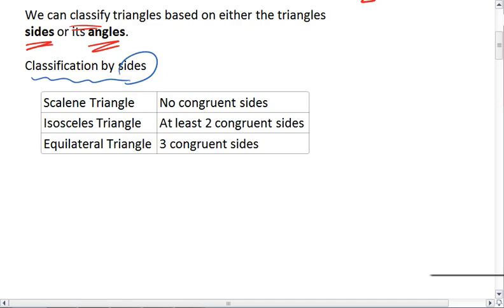If we have a triangle that has no congruent sides, for example, if ABC has sides of lengths 3, 6, and 8, then this triangle is called a scalene triangle.